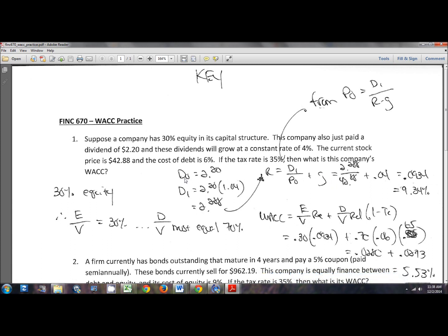To do that, I have to take my D0, my dividend that was just paid, and turn that into a D1 or upcoming dividend. And so obviously you do that by D1 equals D0 times 1 plus G. So you get $2.288. Then you have everything you need to plug right into this guy. 2.288 divided by 42.88 plus my G, which is 0.04. That gives you a cost of equity of 9.34%.